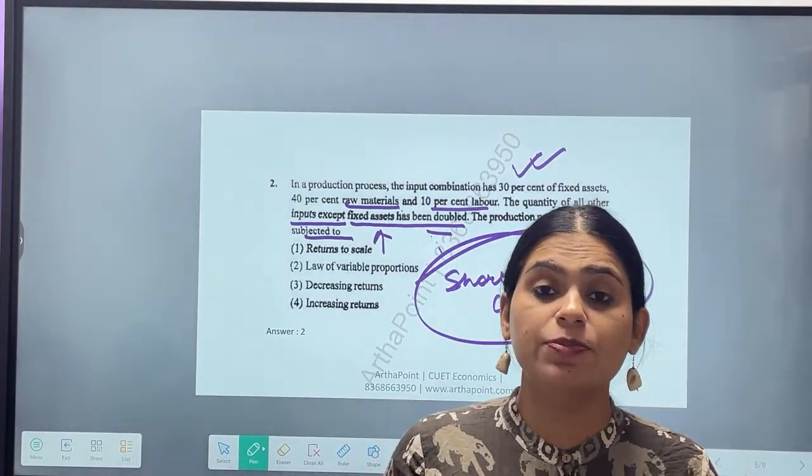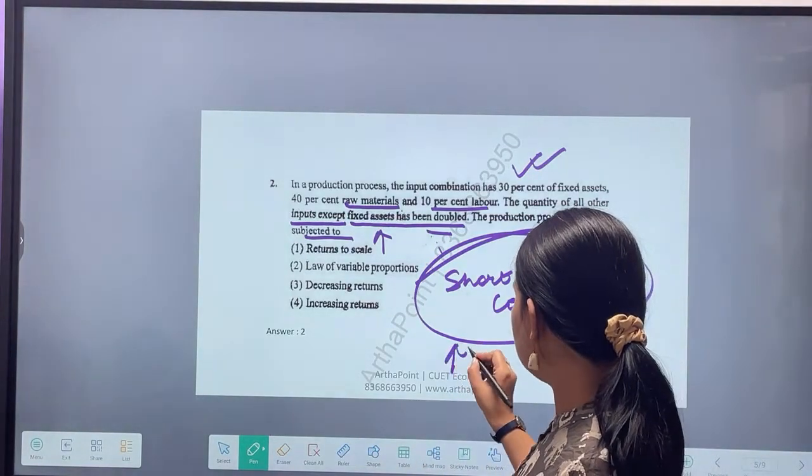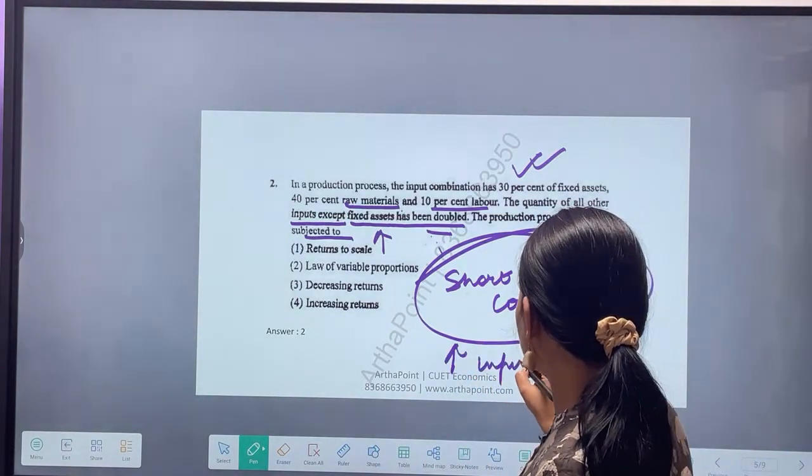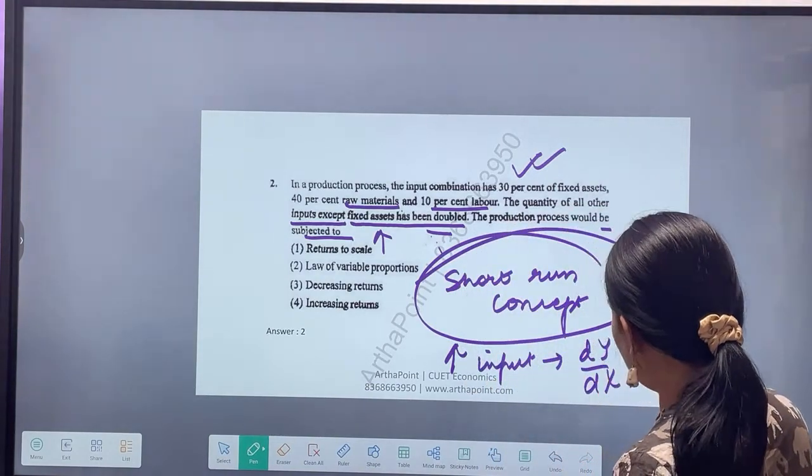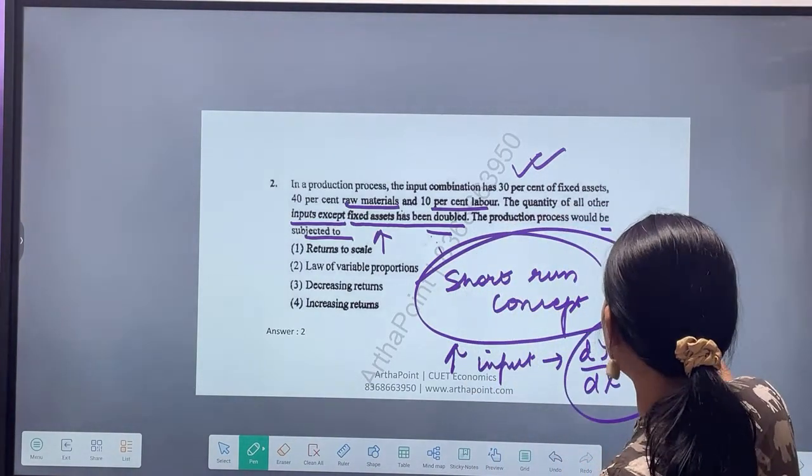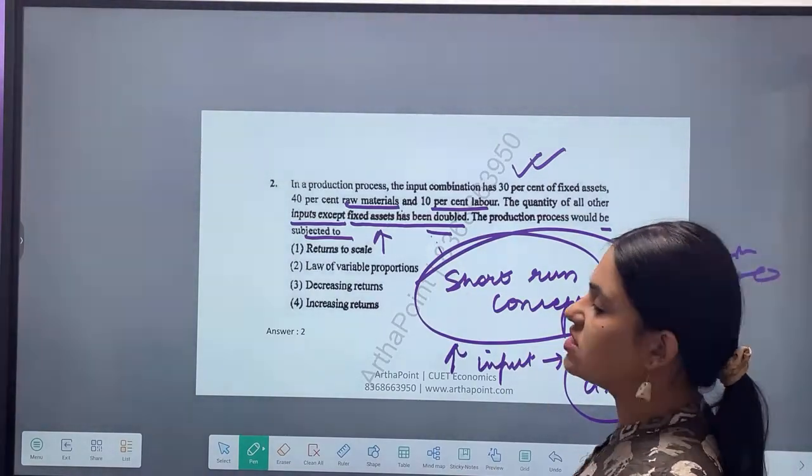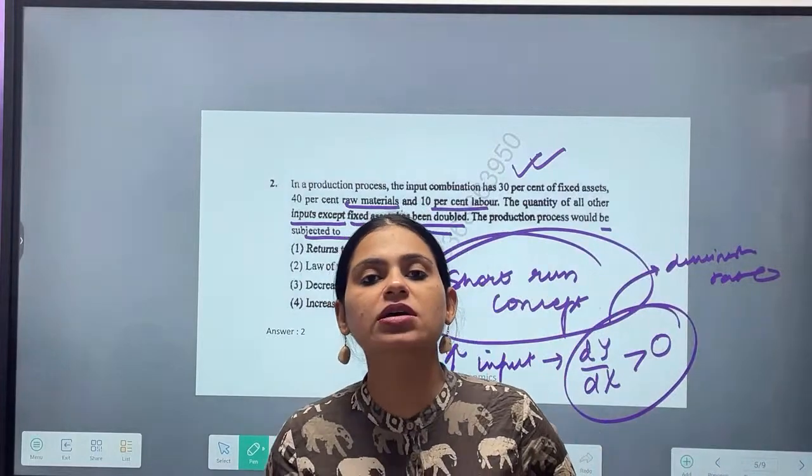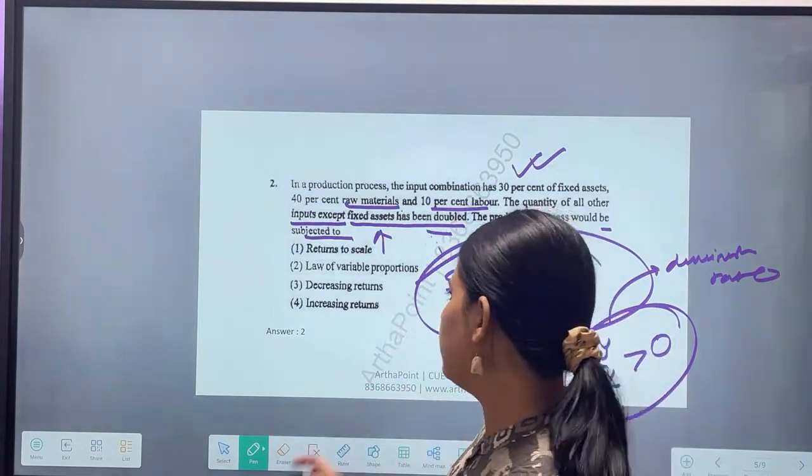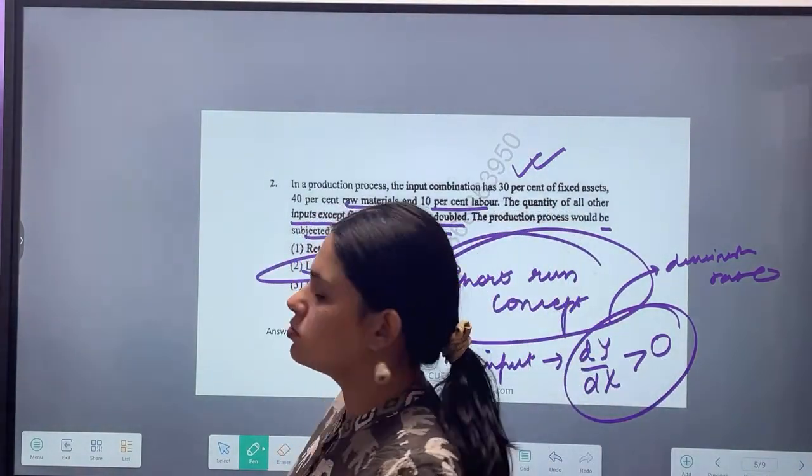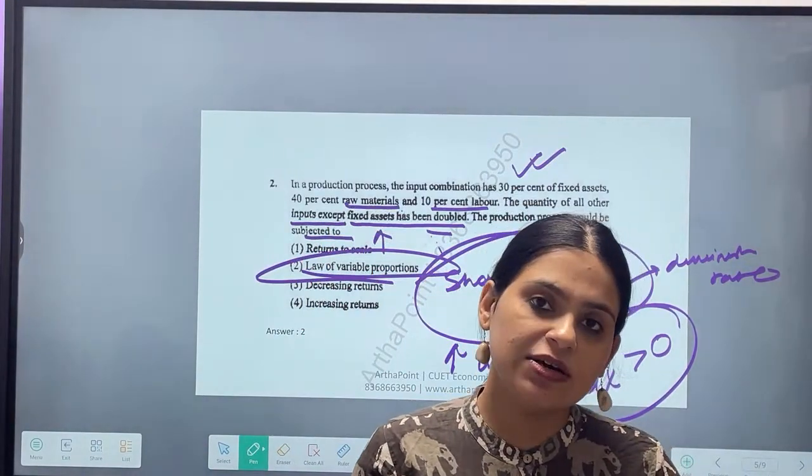In the short run, when you increase the variable inputs, marginal product diminishes. As you increase the input, the output increases of course, but at a diminishing rate. Output increases at a diminishing rate. What is that called? Law of variable proportion. So what will be the answer? The answer will be law of variable proportion. Is that clear?